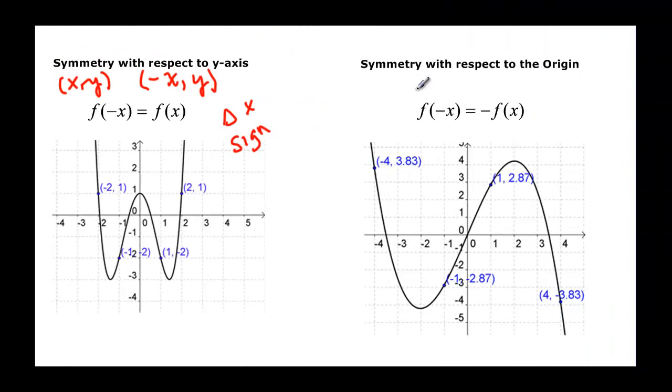Well, symmetry with respect to the origin says f of negative x is equal to the opposite of f of x. That means if I put in a negative x, then I should get out the opposite of what I got when I had a positive x put in. If I have xy, then if I put a negative x in, I'm going to get the opposite of my y. It was y with a positive x, so now it's going to be a negative y with a negative x. So this means that it changes both signs.